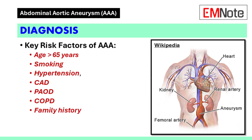It is important to exclude a ruptured abdominal aortic aneurysm in all patients over 65 years of age presenting with abdominal, loin, or groin pain, especially if they have risk factors such as smoking, hypertension, chronic obstructive pulmonary disease, or peripheral vascular disease.